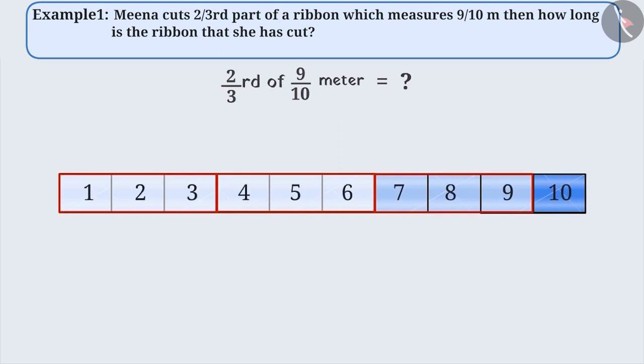As you can see, Meena has taken six parts out of the total ten parts of the meter. Therefore, we can say that the ribbon taken by her is six-tenth meters long. It can be expressed in simpler form such as three-fifths of a meter.